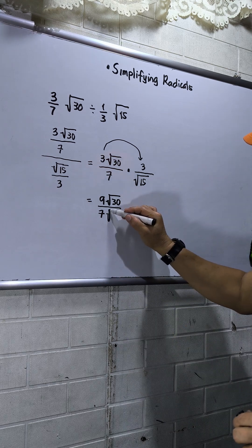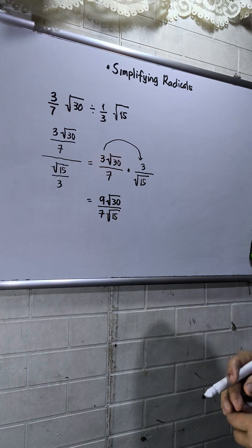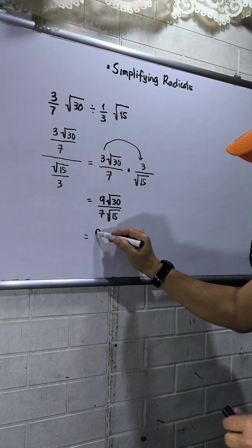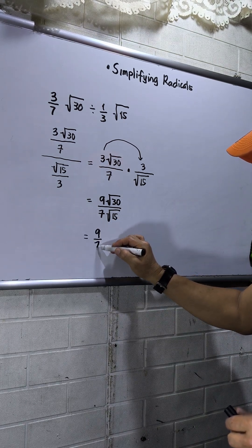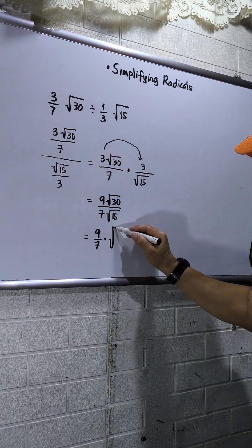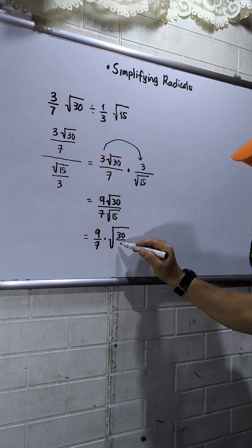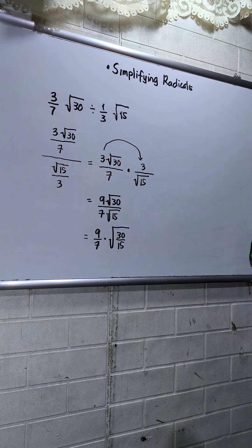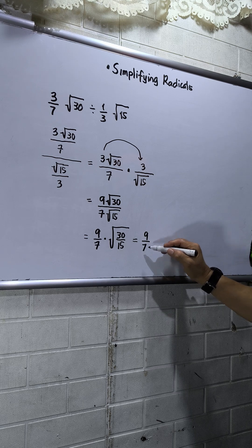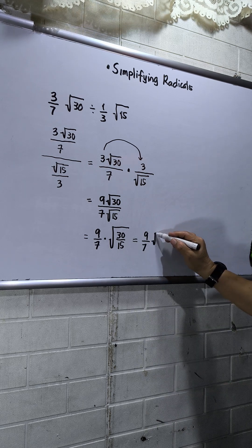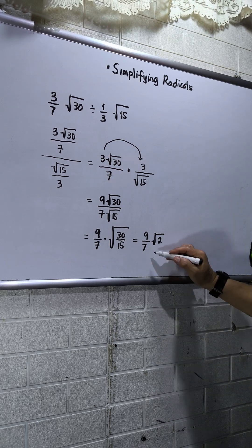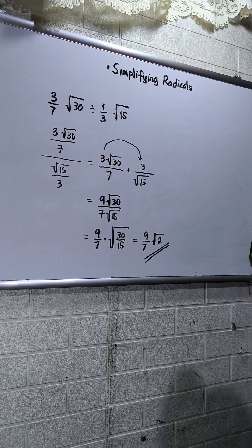Since they have the same, this will be 9 over 7 times square root of 30 over 15. Then what's next? Just divide. So 9 over 7, then square root of 30 divided by 15 is 2.